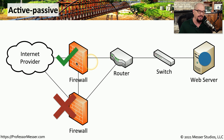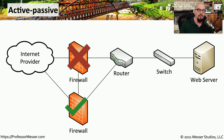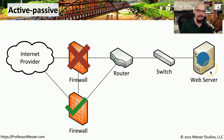But if something happens to that firewall — let's say it loses a power supply — that device will no longer be available and traffic will not be able to pass through it. The passive firewall recognizes that the first firewall has failed, puts itself into active mode, and now all network traffic goes through the secondary device to gain access to the web server.